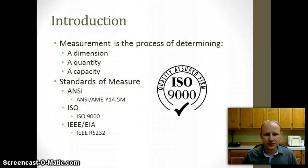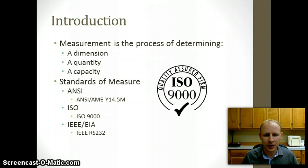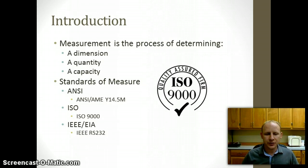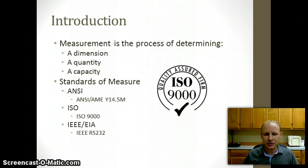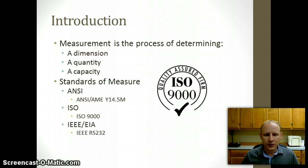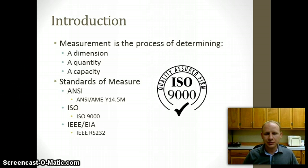When looking at an introduction for measurement systems, we're going to start by defining measurement. As a very basic definition, we can say it's the process of determining a dimension, a quantity, or a capacity. For example, if we want to measure a wall system in a house, we're going to come up with some kind of dimension for it — maybe it's eight feet six inches long. Or if we're measuring something on a CAD drawing, we might find that it's two and a half inches long. So dimension obviously plays an important role.